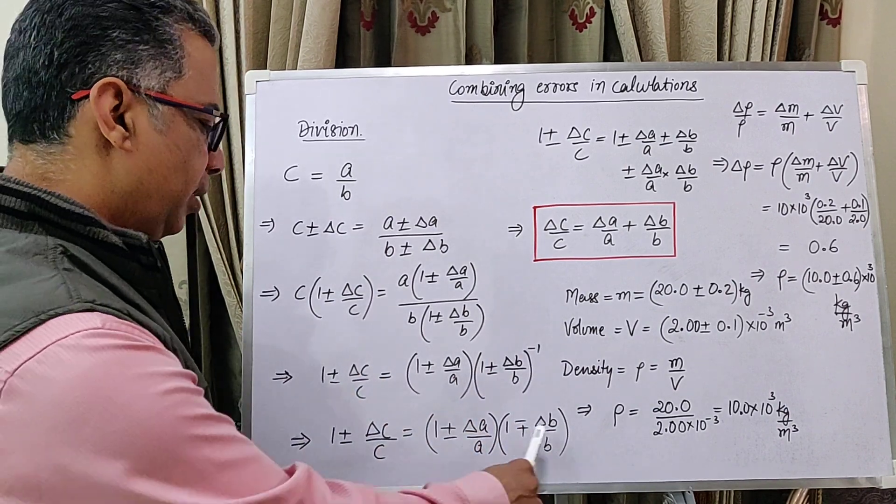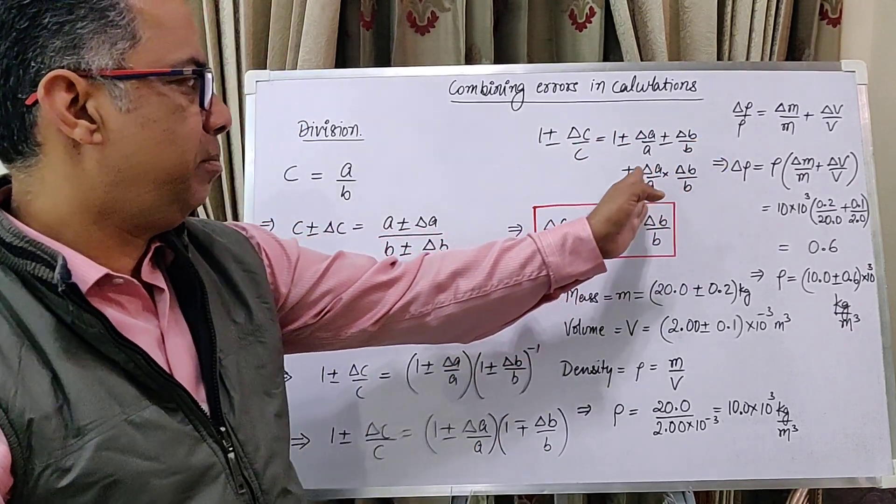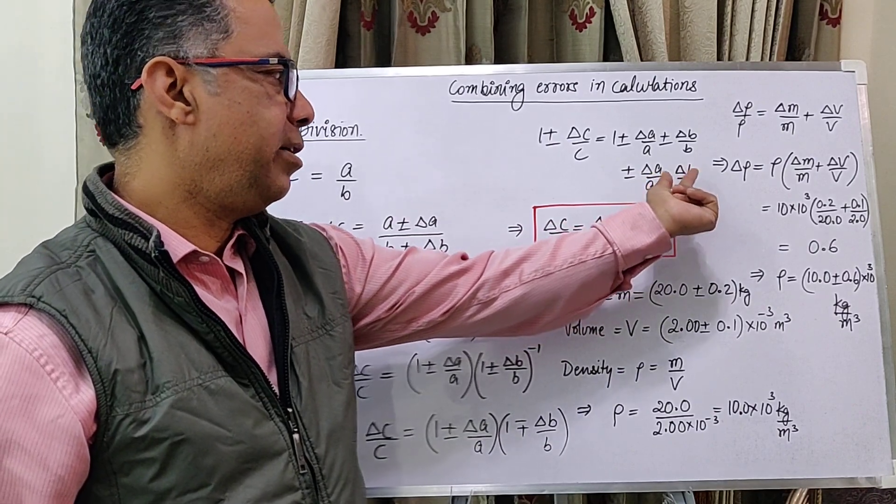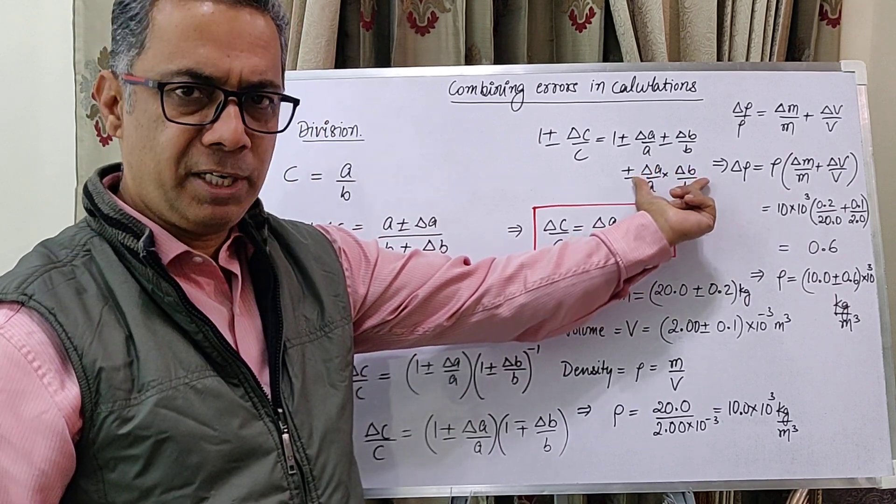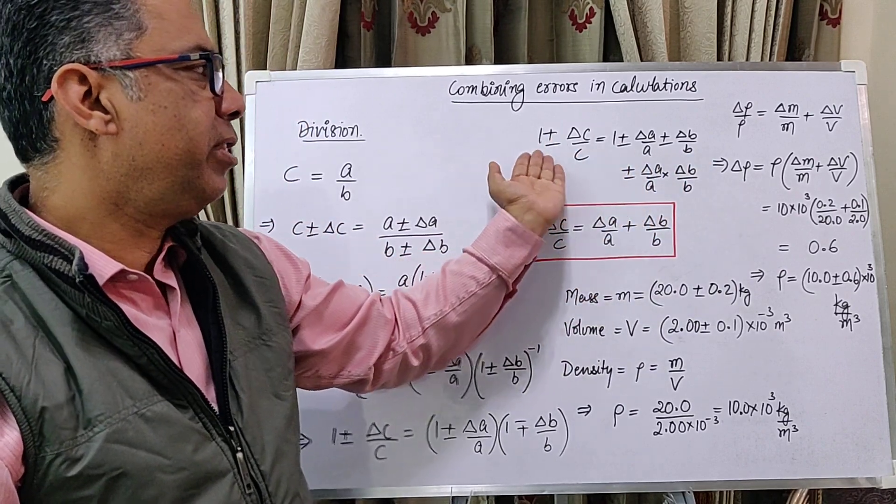And so, this is what we have when we multiply these terms. And in the end, we have a product of delta A by A times delta B by B. These are small numbers, their product is very, very small and therefore, we neglect and we are left with the rest of it.